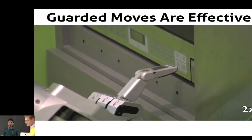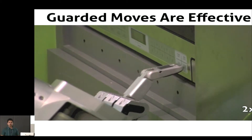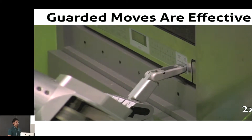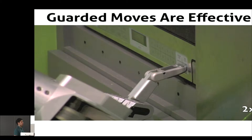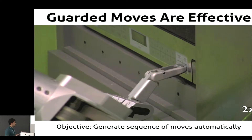The problem, though, is that these sequences of guarded moves had to be hand-coded for each object and for each task. So some programmer sat down, iterated a bunch of times, and came up with a sequence that by the end enabled us to accomplish the task. So the goal of this project was to automate this problem and to come up with a sequence automatically.